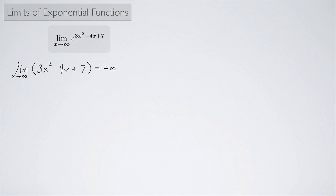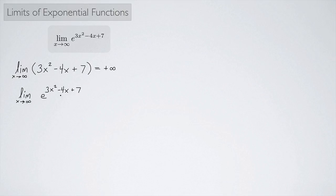So we have the limit as x approaches infinity of e to this exponent. As the exponent gets bigger and bigger, we know what the graph of e to the x looks like — it keeps rising. So we would expect this limit to also be approaching infinity, and in fact it is positive infinity.